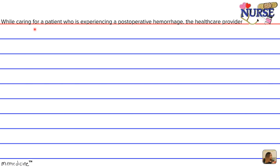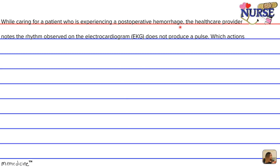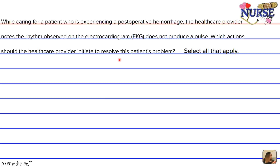While caring for a patient who is experiencing a postoperative hemorrhage, the healthcare provider notes the rhythm observed on the electrocardiogram. The EKG does not produce a pulse. Which actions should the healthcare provider initiate to resolve the patient's problem? Select all the options or actions that apply.